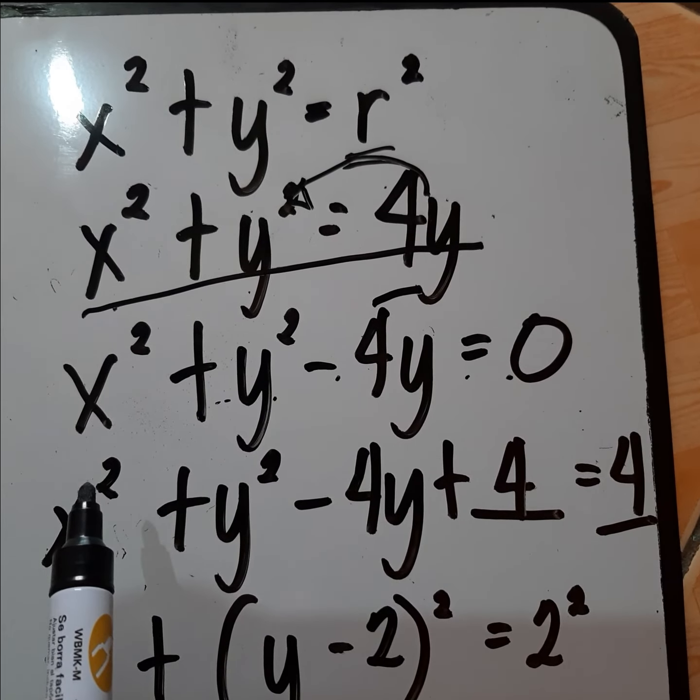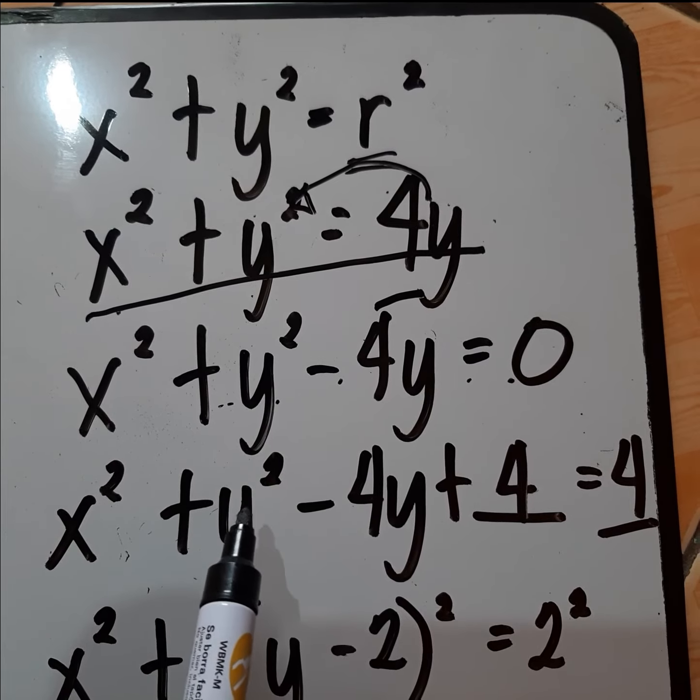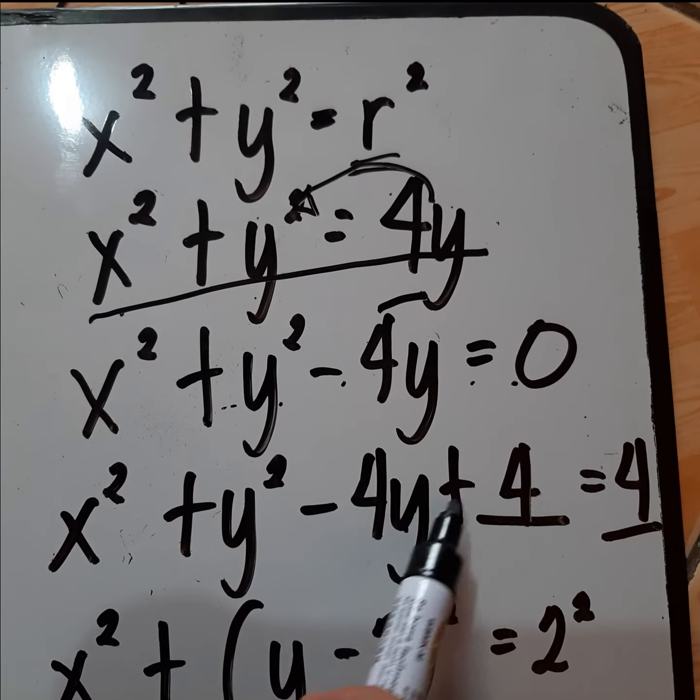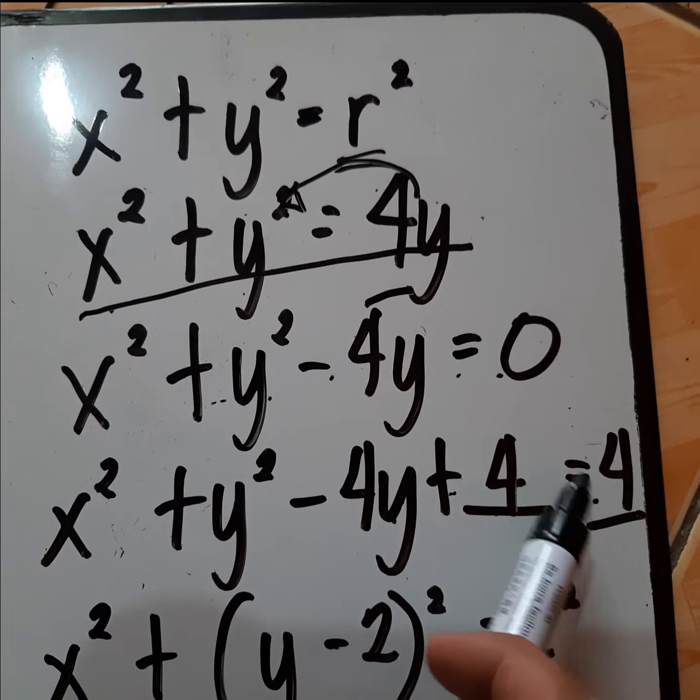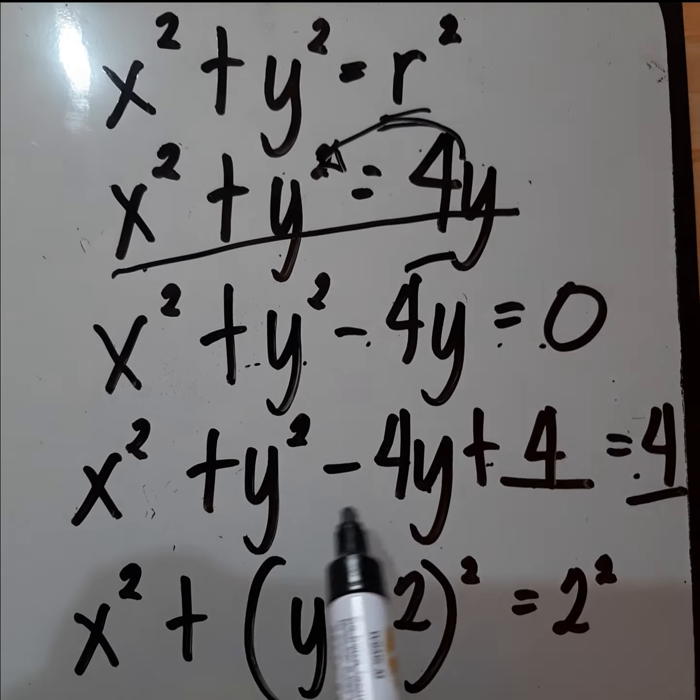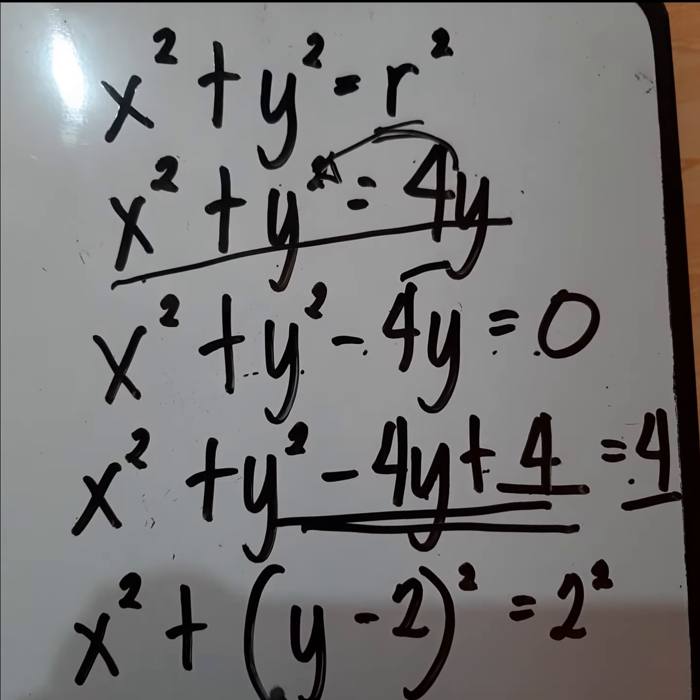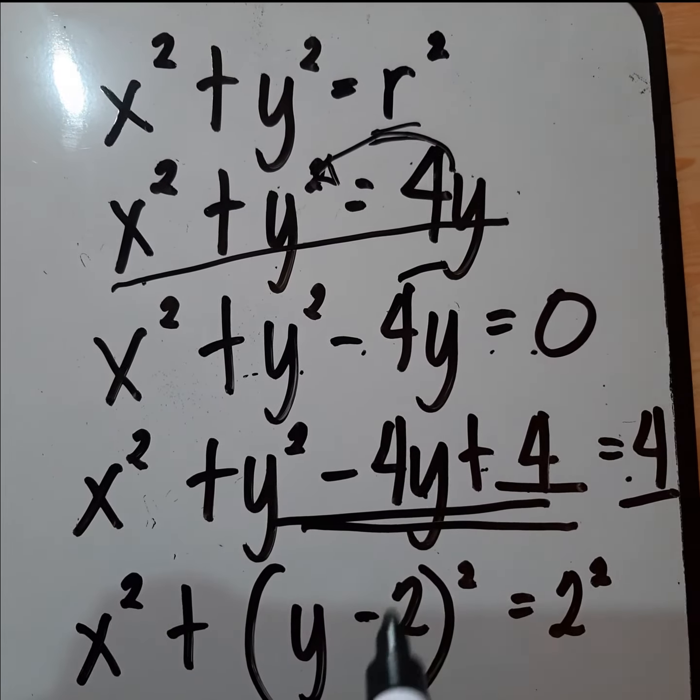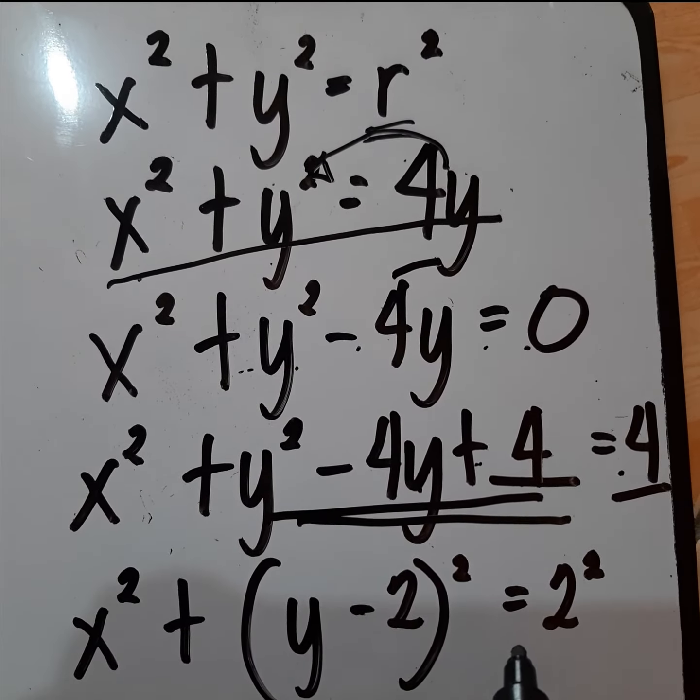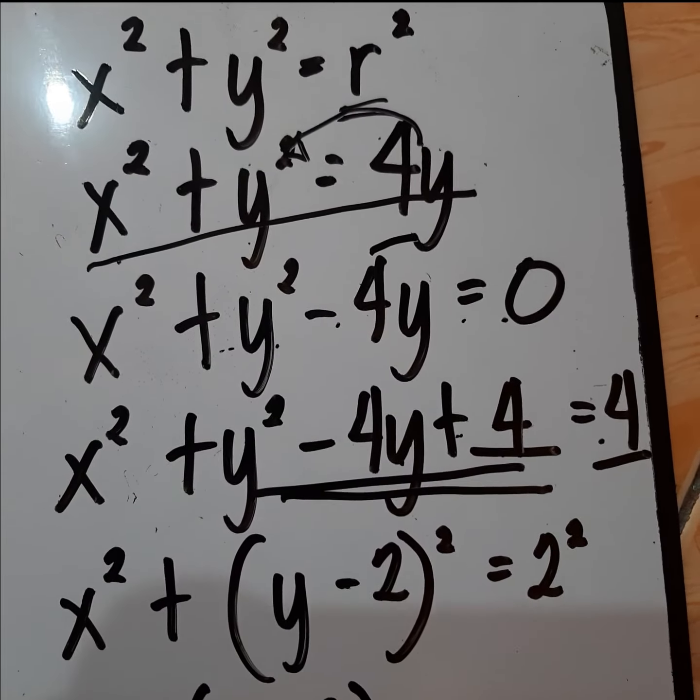In this process, we need to use completing the square. So x squared plus y squared minus 4y plus 4 is equal to 4. Then we need to simplify this equation. x squared plus open parenthesis y minus 2 closed parenthesis squared is equal to 2 squared.